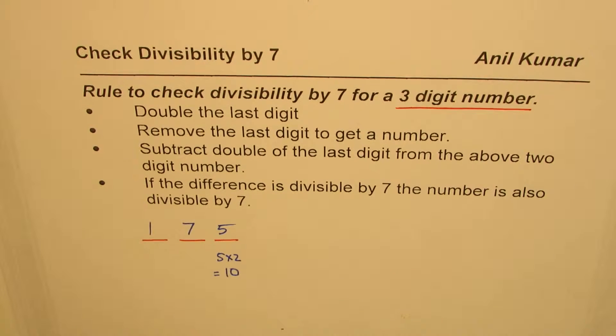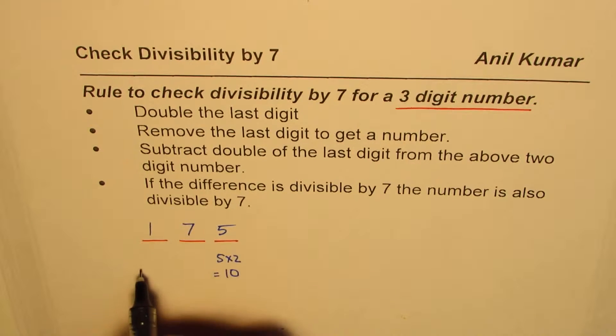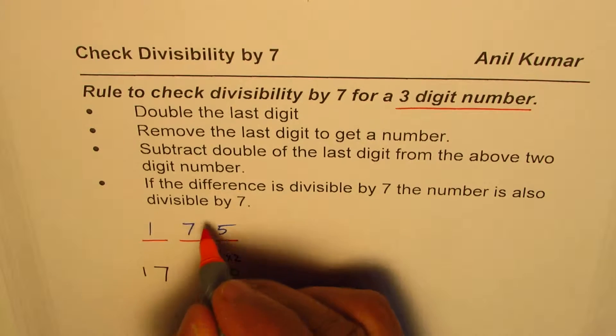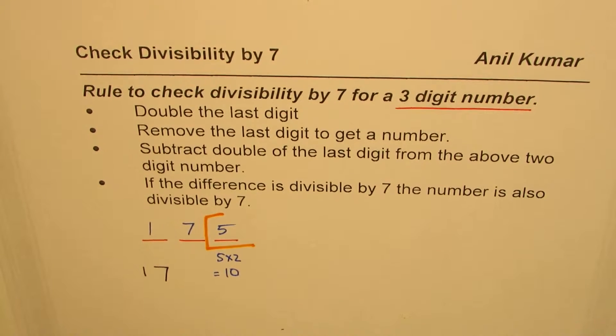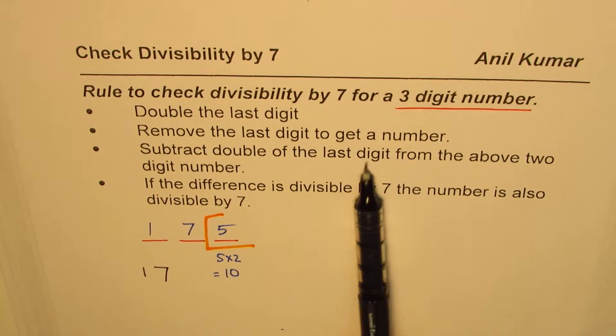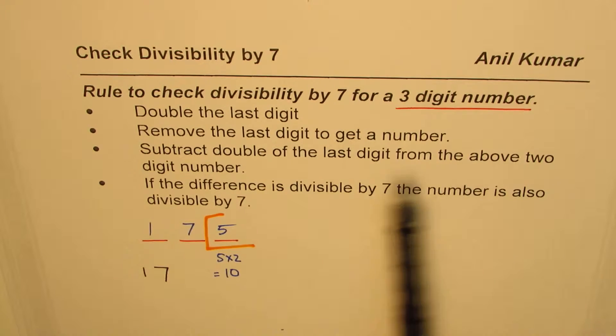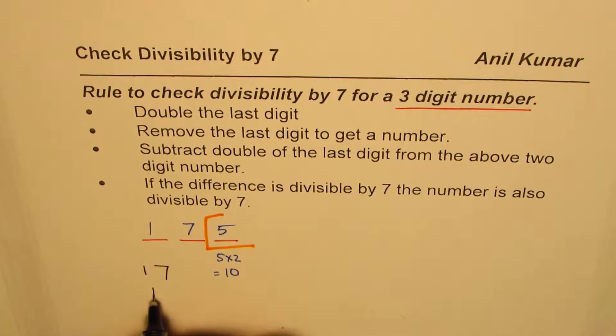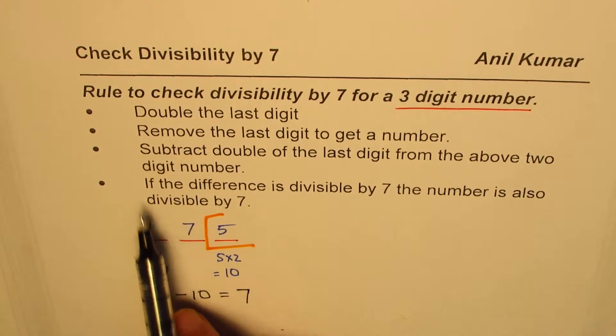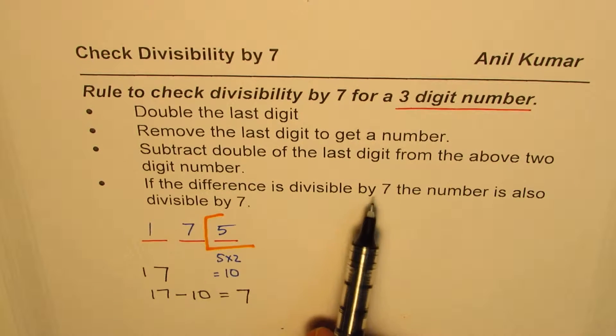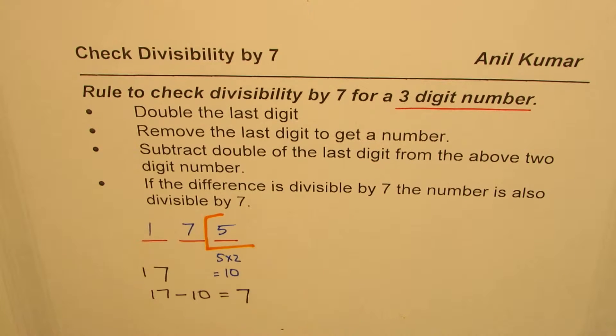If I remove the last digit I get 17. Now subtract double of the last digit, which is 10, from the above two-digit number. So 17 minus 10, what do we get? We get 7. The last thing is if the difference is divisible by 7, the number is also divisible by 7.